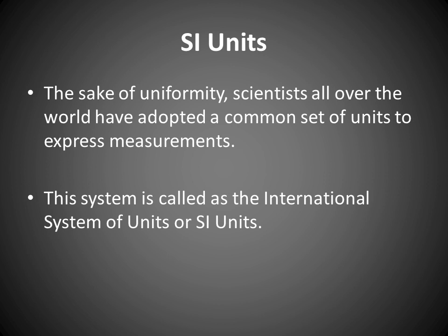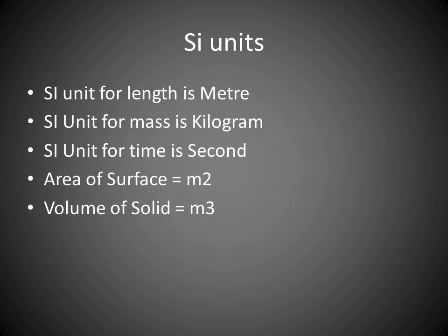SI units: For the sake of uniformity, scientists all over the world have adopted a common set of units to express measurements. This system is called the International System of Units, or SI units. The SI unit for length is meter, for mass is kilogram, for time is second. Area of a surface is expressed in m², and volume of solids is expressed in m³.